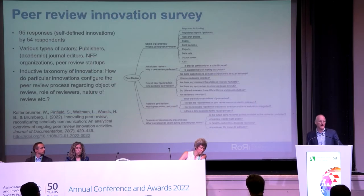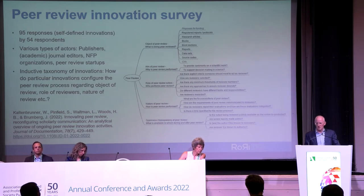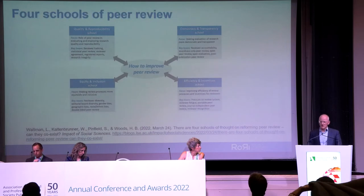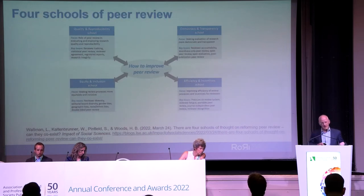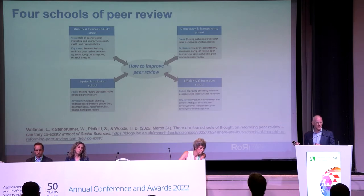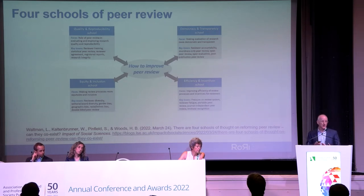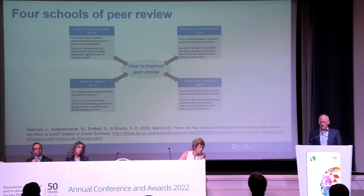We recently published a paper looking at innovations in the publisher community on peer review, and developed a taxonomy of peer review to carry out that analysis. We also put forward a model of the four schools of peer review, which attempts to tease out complementarities as well as tensions — such as the quality and reproducibility driver versus the efficiency and streamlining driver, or the democracy and transparency driver versus the equity and inclusion driver. This four-schools paper is available as a preprint and currently under peer review. Thank you.